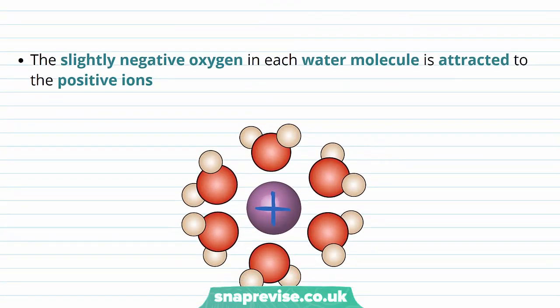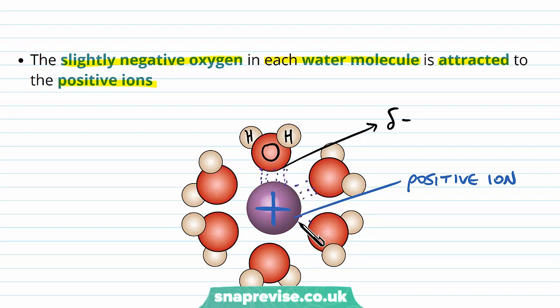This means that for the positive ions, the opposite happens. The slightly negative oxygen in each water molecule is attracted to the positive ions. We have the water here again, and we have oxygen, this time facing the ions. The oxygen has a delta negative area because it's negatively charged. This is the positively charged ion, for example something like sodium or potassium, and the electrostatic attraction exists again, between this negative area and a positive area, and it happens to all the water molecules surrounding the ion.